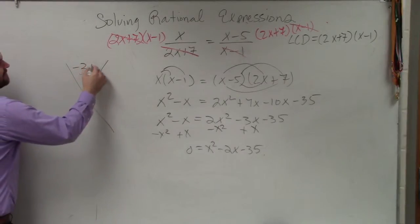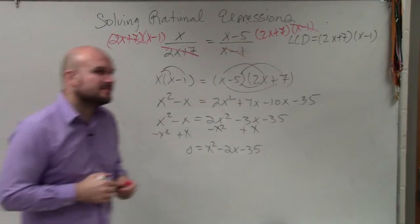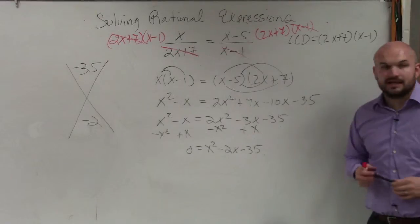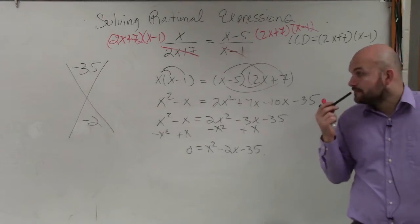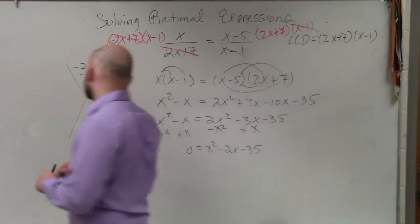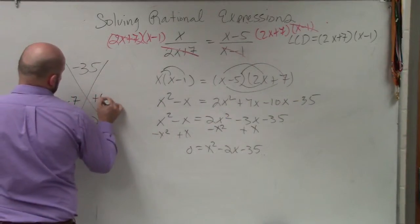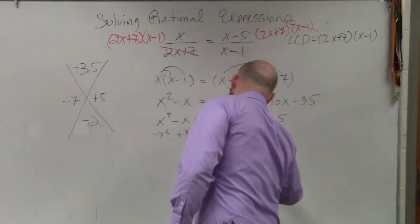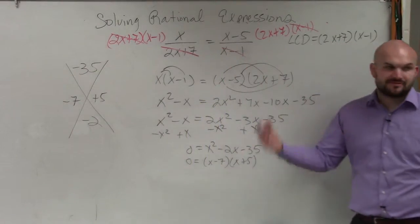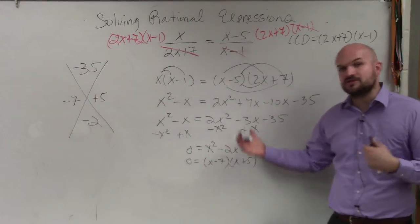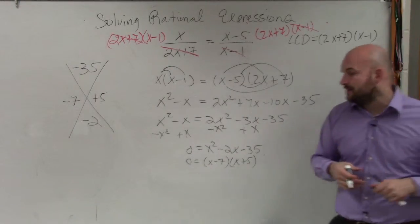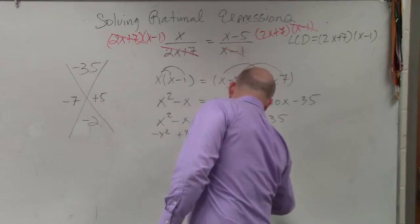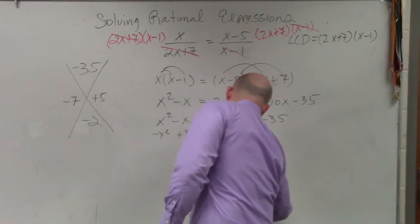So here we have negative 35 and negative 2. What we're doing is trying to determine what two numbers multiply to give me negative 35, but then add to give me negative 2. So 0 equals x minus 7 times x plus 5. Then we can apply the zero product property, which states if two expressions multiplied equal 0, then one or both of them equal 0. So x minus 7 equals 0 and x plus 5 equals 0, giving x equals 7 and x equals negative 5.